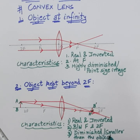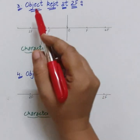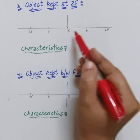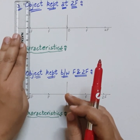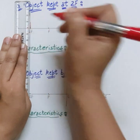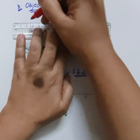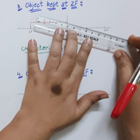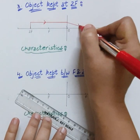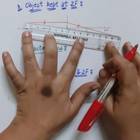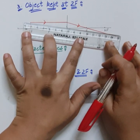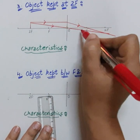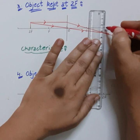For the third position, the object is kept at 2f. Draw the principal axis, mark the optical center, and mark f and 2f three centimeters on both sides. Place the object at point 2f, about 1 centimeter in length. Follow rule one: the ray goes parallel to the principal axis and passes through the focus. The second ray passes through the optical center and goes straight — rule number three. These two rays meet at point 2f.